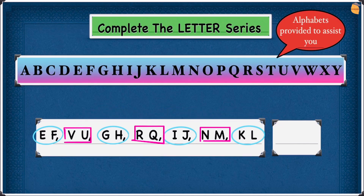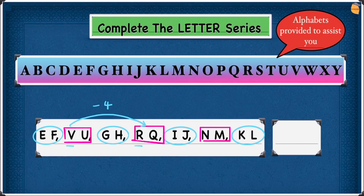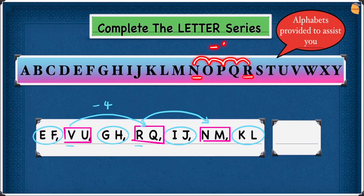Again we are going to do the same thing. Let's look at the first letter: V and R. What do we have to do to V to get to R? V is here and R is here — 1, 2, 3, 4 — four steps backwards, so that will be minus 4. Write minus 4. Now R to N: R is here and N is here — 1, 2, 3, 4 — minus four steps. Write minus 4.